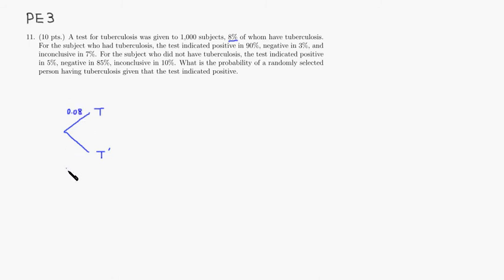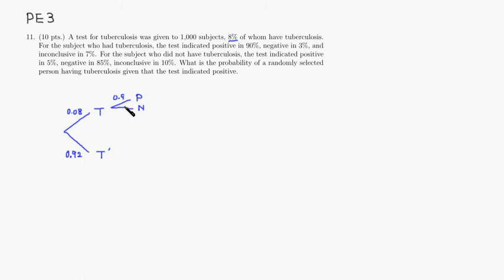The probability of not having tuberculosis is 0.92. For people who have tuberculosis, they test positive 90% of the time, so P for positive is 0.9. Negative is 3% of the time, so N is 0.03.